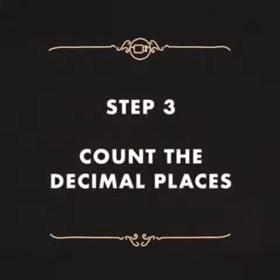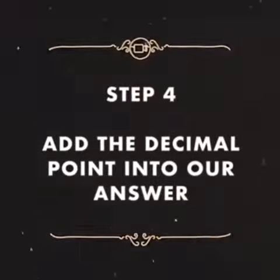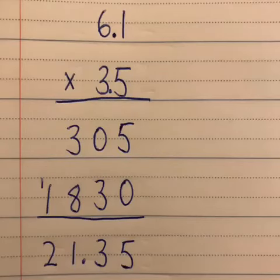Now that we've finished multiplying, we need to do step 3. Count the decimal places in the original question. So looking back, we started with 6.1 times 3.5. Here in the original question, we've got two numbers, the 1 and the 5, after decimal points. This means we're going to need two decimal places in our answer. So we drop that decimal point into the spot that gives us two decimal places. So our final answer is 21.35.